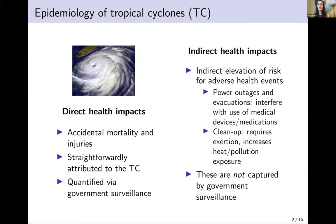Direct impacts are easily attributable to the storm and are generally captured well by post-storm surveillance done by government agencies in the US. However, tropical cyclones can also indirectly elevate risk for a range of adverse health events because they often cause power outages and require evacuations, which can interfere with the use of medical devices and medications, and usually necessitate cleanup involving physical exertion and increased exposure to heat and pollution. For instance, someone might have a heart attack while cleaning up, need hospitalization because medical devices don't work during power outages, or require psychiatric care due to stress.